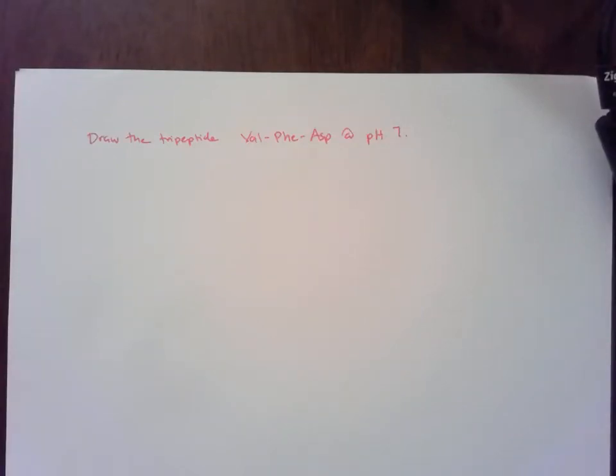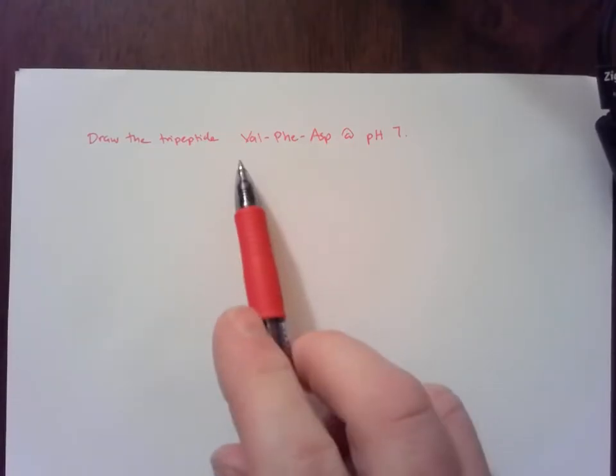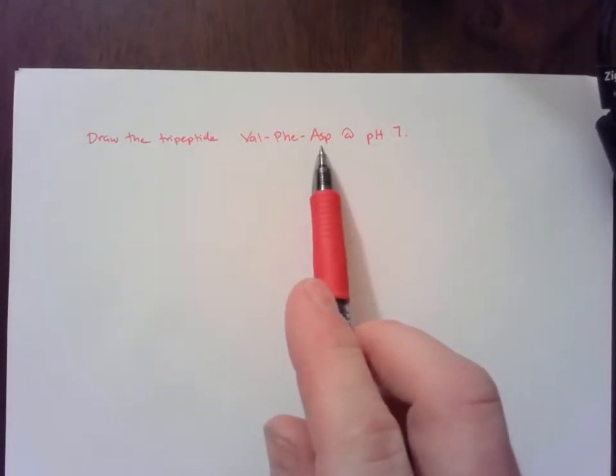In this video, I'm going to show you how to draw a tripeptide at pH 7. In this case, I'm doing valine phenylalanine aspartic acid.